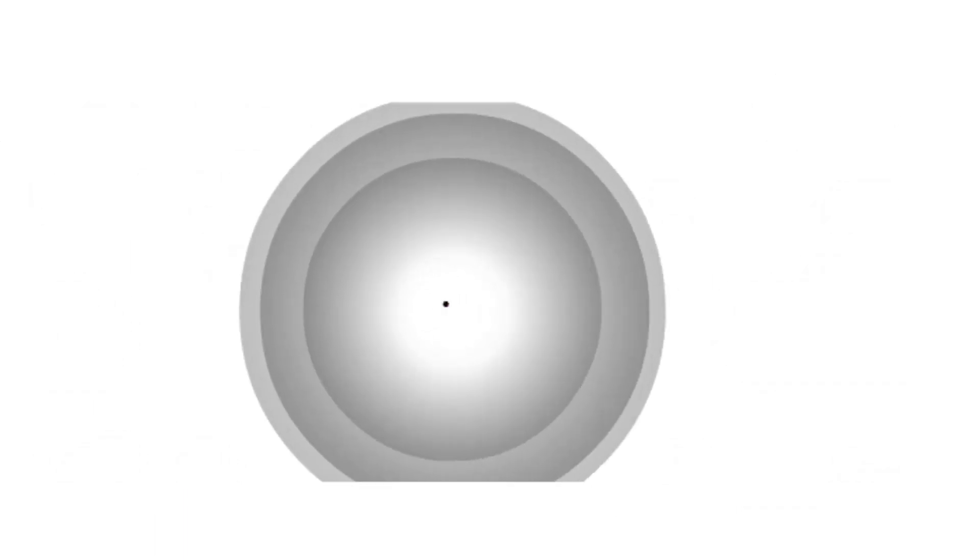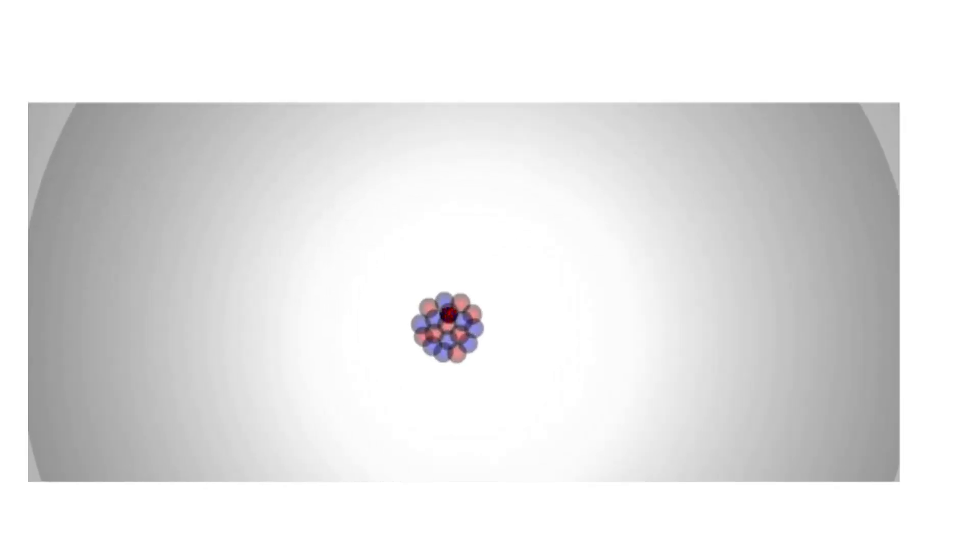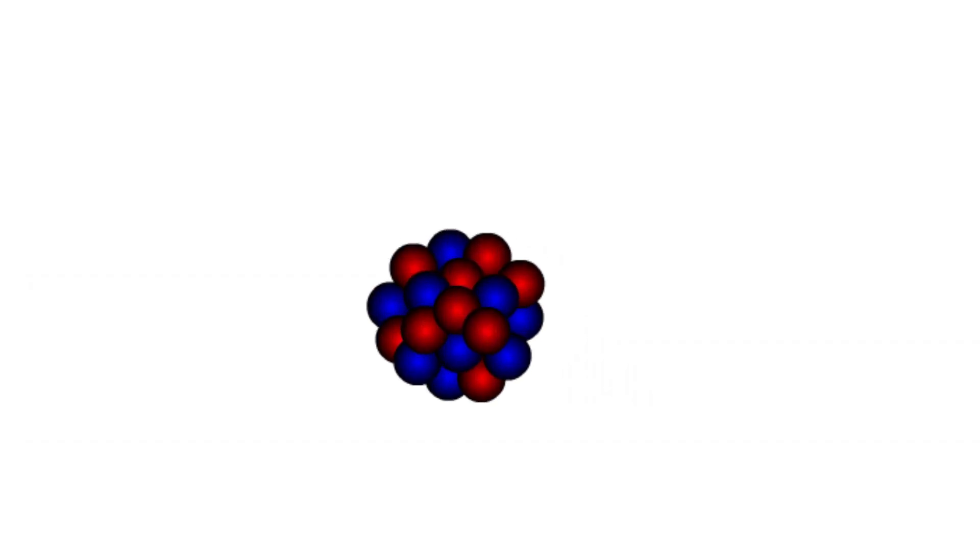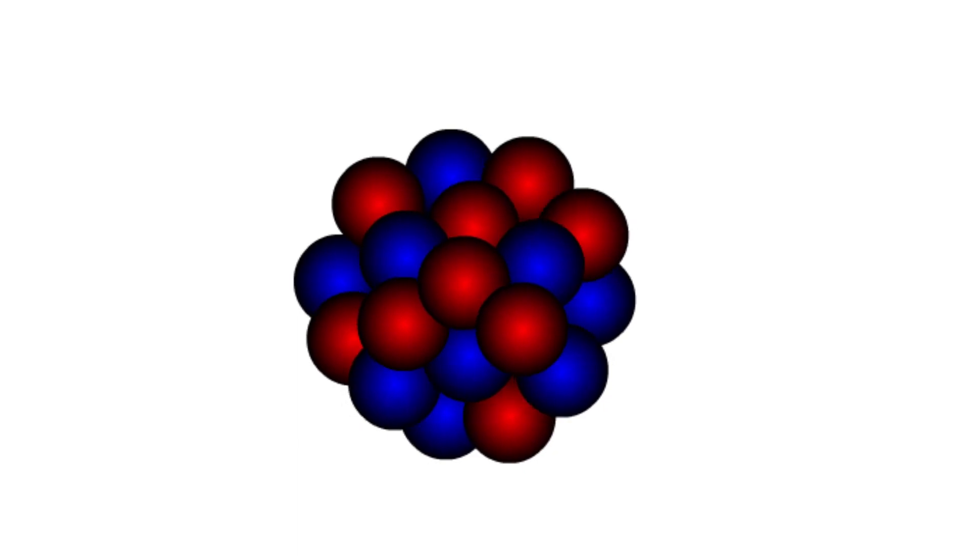The atoms themselves are also mostly empty space with a tiny dense nucleus in the middle made up of positively charged particles called protons and particles with no electric charge called neutrons. If an atom were the size of a sports stadium, the nucleus would be about the size of an orange.